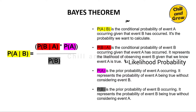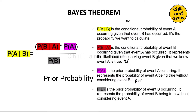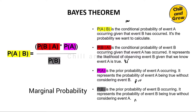P of A is called the Prior Probability — what we believed about event A before seeing any evidence. P of B is called the Marginal Probability — the overall probability of evidence B. So: P of A given B is Posterior, P of B given A is Likelihood, P of A is Prior, and P of B is Marginal Probability.